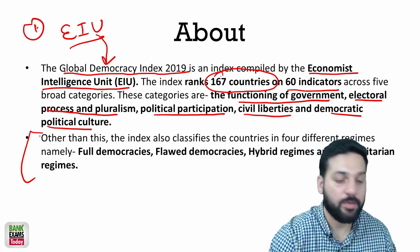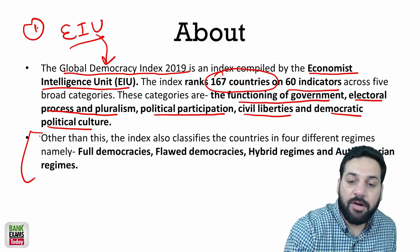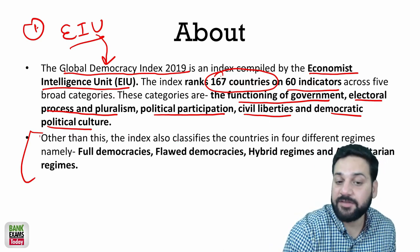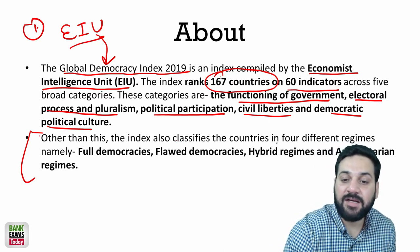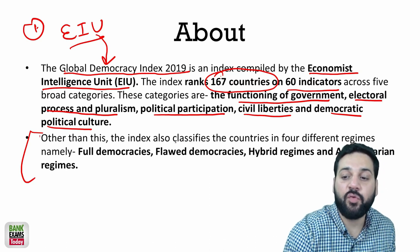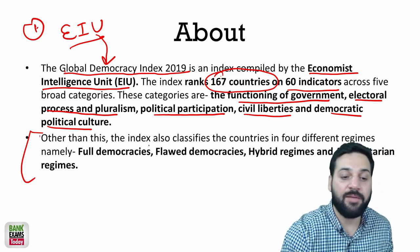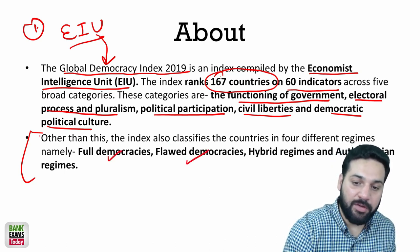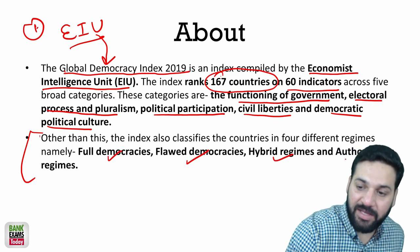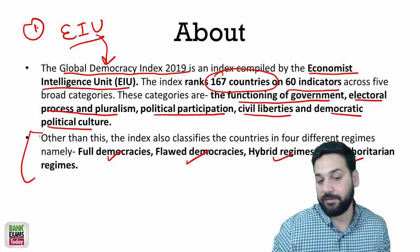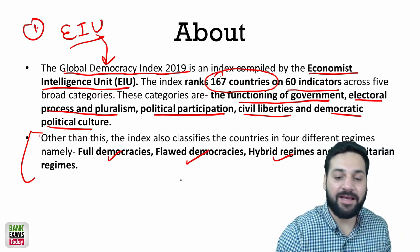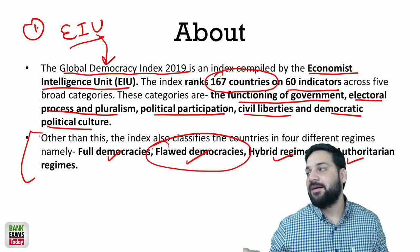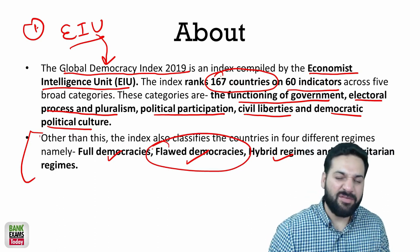According to this index, countries are categorized into four different regimes: full democracies, flawed democracies, hybrid regimes, and authoritarian regimes.